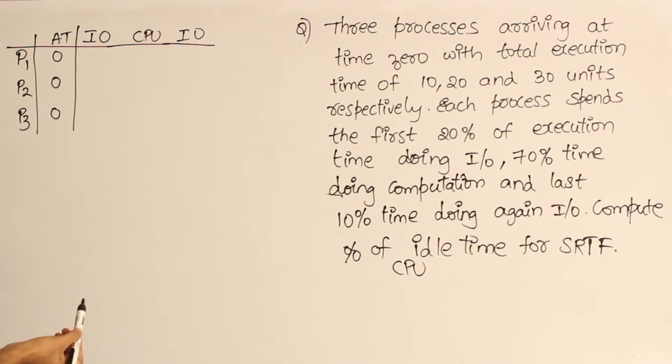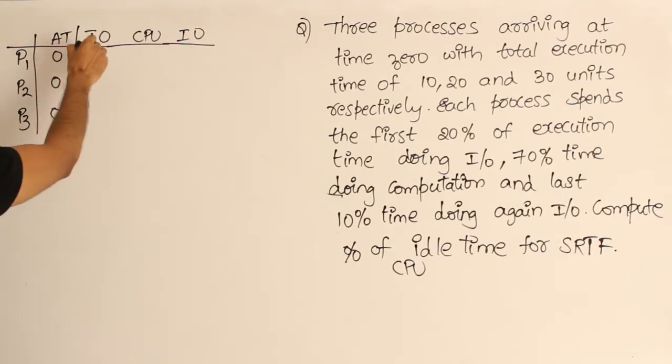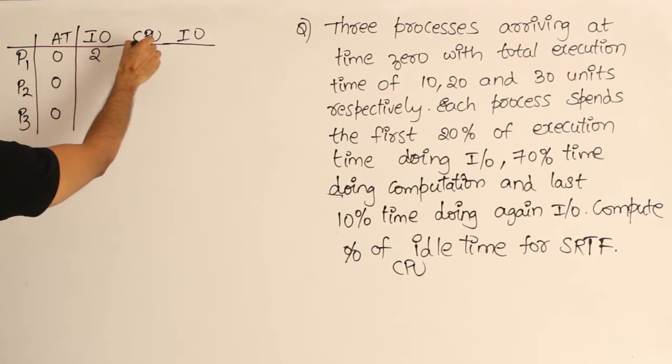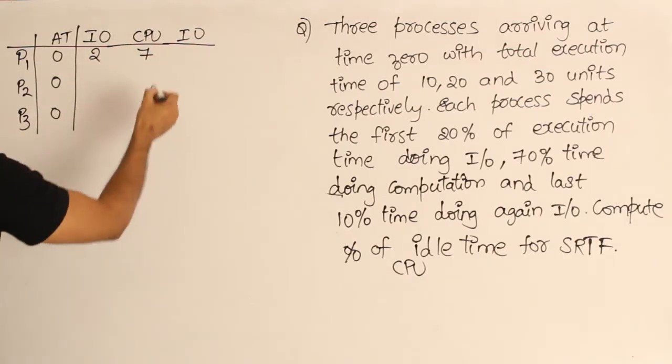P1 requires 10 units of time, out of which 20% is doing I/O, which means 2 units is I/O, then 70% is CPU, which means 7, and then 10% is I/O, which means 1.